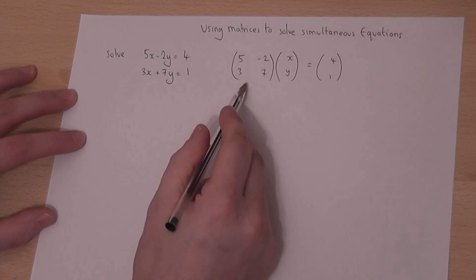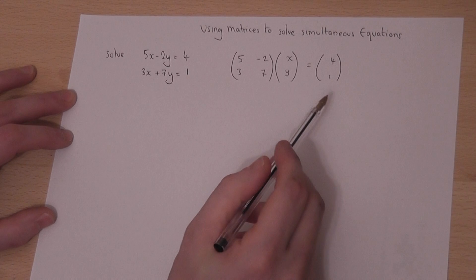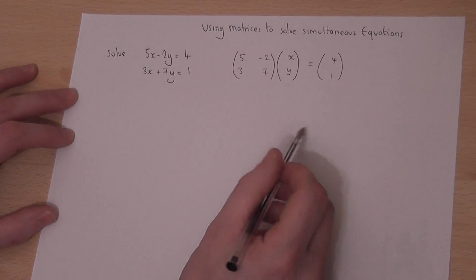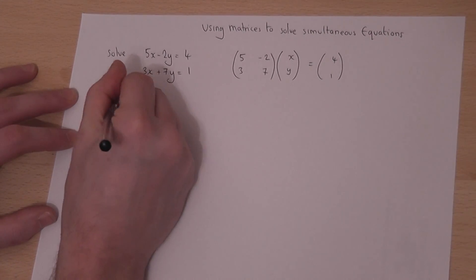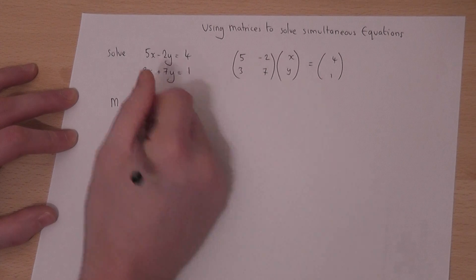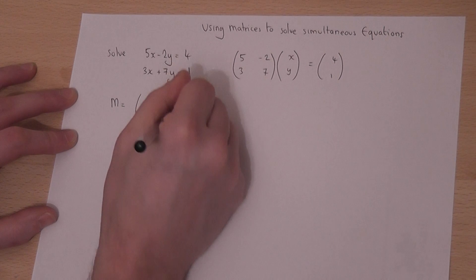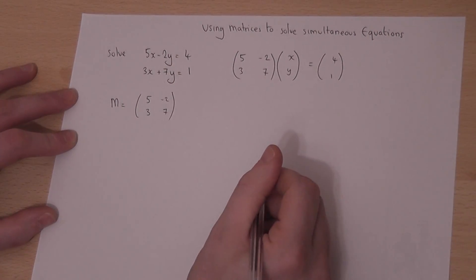These two statements, or pairs of equations, are equivalent to each other. If we let M equal this matrix here, then to solve this pair of simultaneous equations we find the inverse.